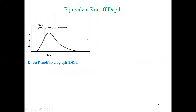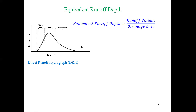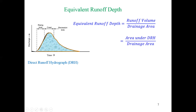For the rational method and NRCS method we got runoff as a discharge in cubic feet per second or cubic meters per second. If we want to know the runoff depth — knowing the drainage area — the runoff depth is essentially the depth of water spread over that area. To calculate it, we find the runoff volume over the drainage area, and that is called the equivalent runoff depth.